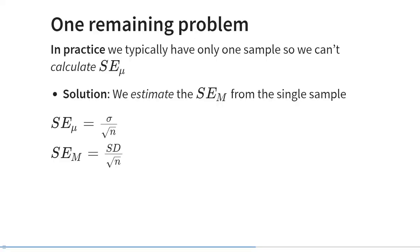There's one remaining problem that I've ignored until now, and that is that we often don't know what the population standard deviation is. And there's a very simple solution: we just replace the population standard deviation with the sample standard deviation.